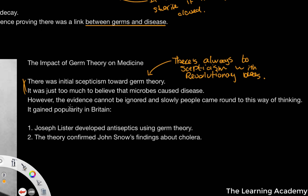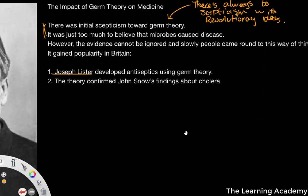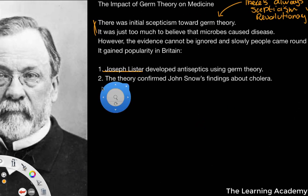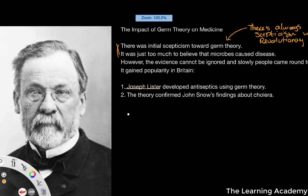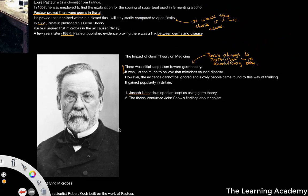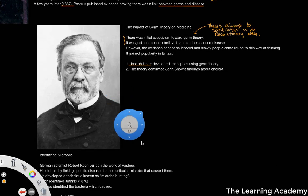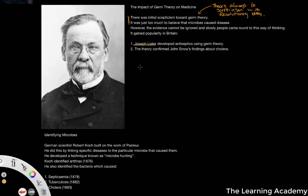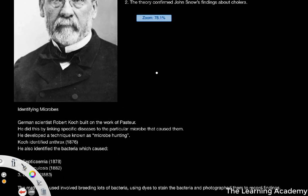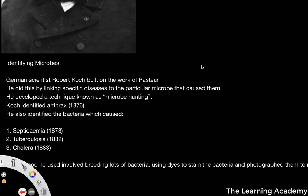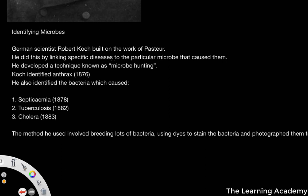As a result, germ theory did gain popularity in Britain. The doctor and scientist Joseph Lister developed antiseptics using germ theory, and it also confirmed John Snow's findings about cholera. We see that germ theory had quite a big impact on the medical community, and as a result there was sort of a race to identify microbes and identify what diseases they link to.